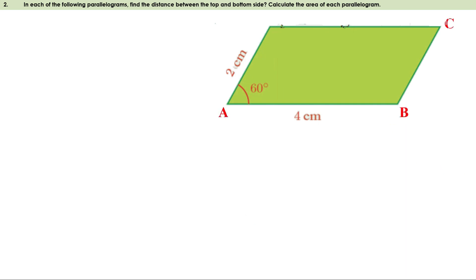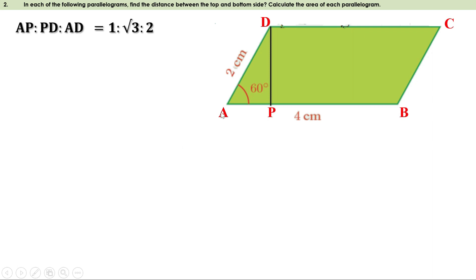Now the second part of the problem. Let us give a name for this parallelogram. As in the previous case, draw a perpendicular from D to AB and let it meet at P. Now look at triangle APD. Angle A is 60 degrees, angle P is 90 degrees, therefore angle D equals 30 degrees. So it is a triangle with angles 30-60-90, and the ratio between the sides is 1:√3:2. That means AP:PD:AD = 1:√3:2. We have to find PD and we know AD, so let us take the ratio between PD and AD, which is √3:2.